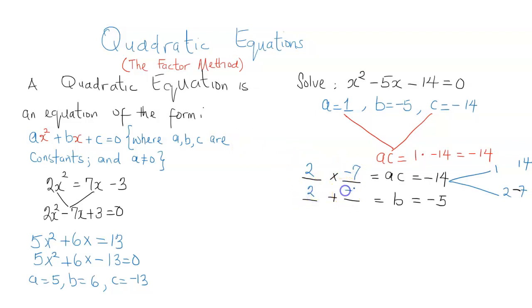So the idea here is to replace the middle term here, which is negative 5x, with these two numbers. So I'm going to have x squared. So in place of negative 5x, I would have positive 2x and negative 7x.